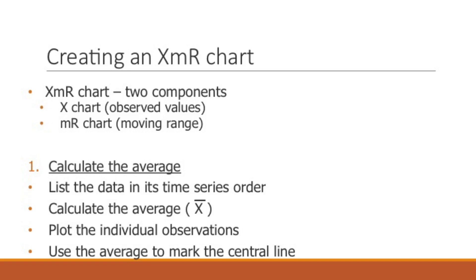One of the most common statistical process control charts is an XMR chart. There are two components: the X chart, which displays the observed values of the data you're looking at, and the moving range chart, which is calculated from the observed values. The first step is to calculate the average of all your data points. You list the data in time series order, calculate the average or X-bar, plot the individual observations, and use the average to mark the center line. This is similar to creating a run chart except you use the mean, the X-bar, instead of the median.